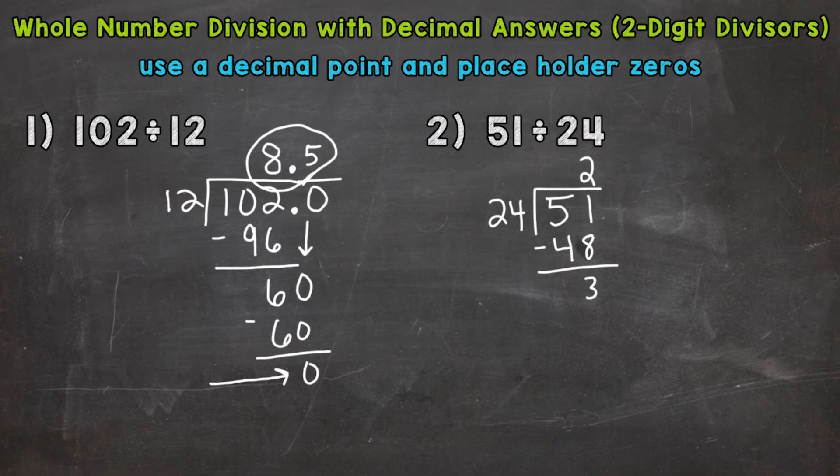2 remainder 3 would be correct, but again we want this in decimal form. So let's place our decimal and bring that straight up into our answer. We're going to use a placeholder zero that we can bring down in order to continue through our process. So bring that zero down. We end up with 30 divided by 24. How many whole groups of 24 out of 30? 1. So 1 times 24 is 24. Subtract, we get 6.